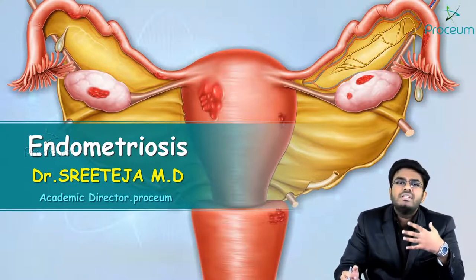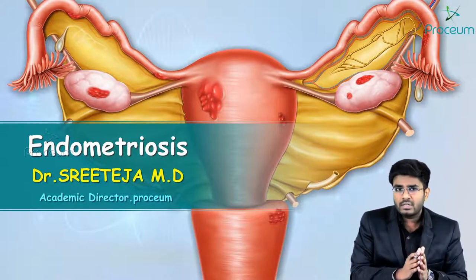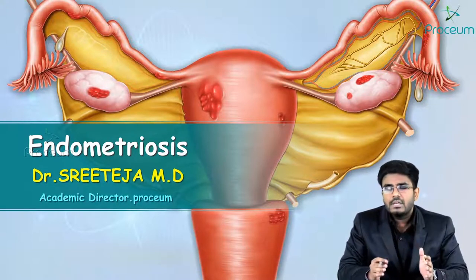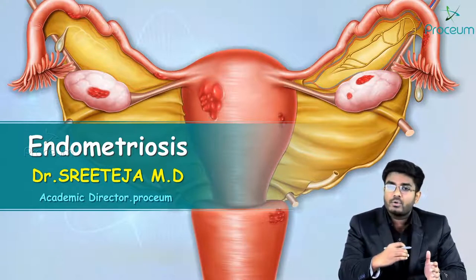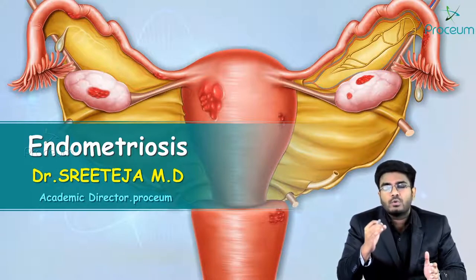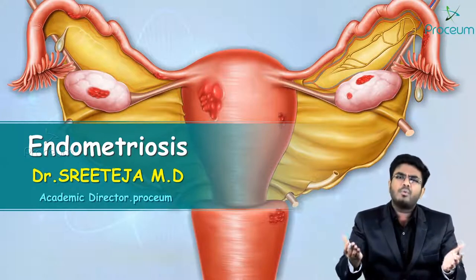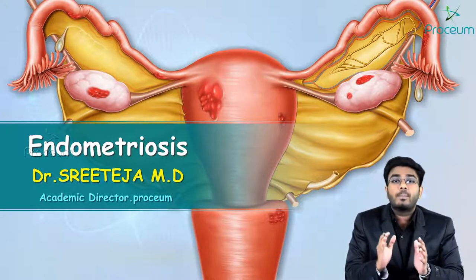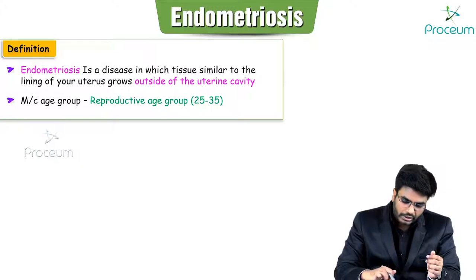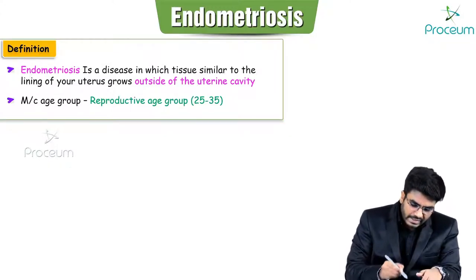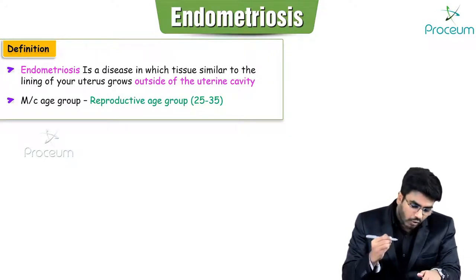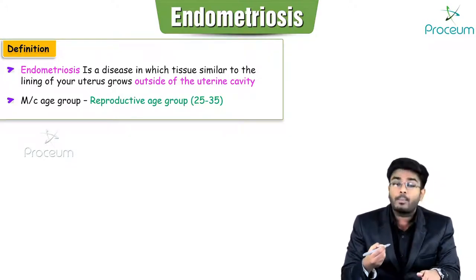Endometriosis is seen in which age group? It is a disease of the reproductive age group woman, that is 25 to 35 years, or up to 40 years — just like uterine fibroids. The most commonly affected age group is the reproductive age group.